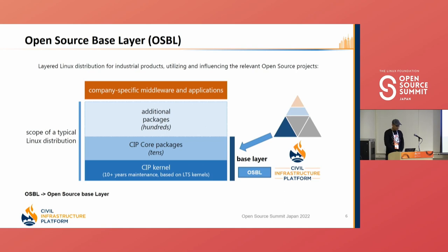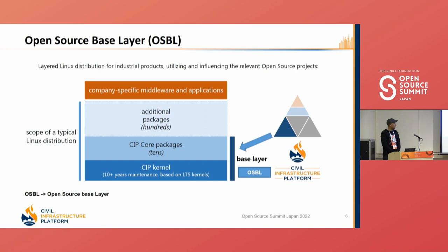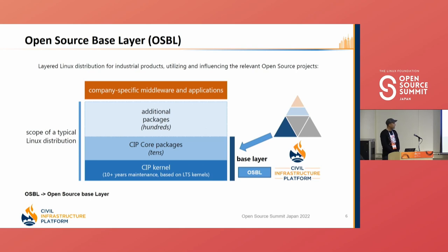In CIP, we have an open source base layer comprising CIP core packages and CIP kernel. As part of main development, we focus on continuously maintaining the CIP kernel and CIP core packages for long-term support. Currently the latest kernel CIP supports long-term is the 5.10 kernel. As part of IEC certification activities, we are focusing to strengthen this OSBL layer, and the CIP kernel needs additional things to meet IEC requirements, same as the CIP core packages.